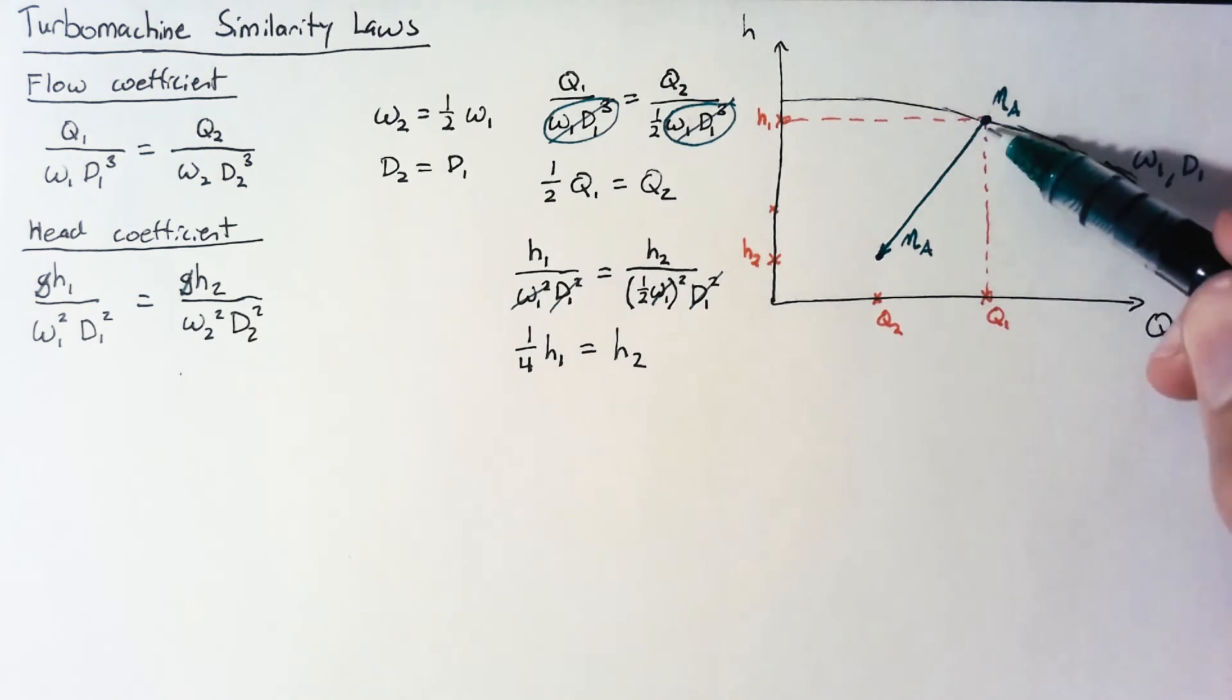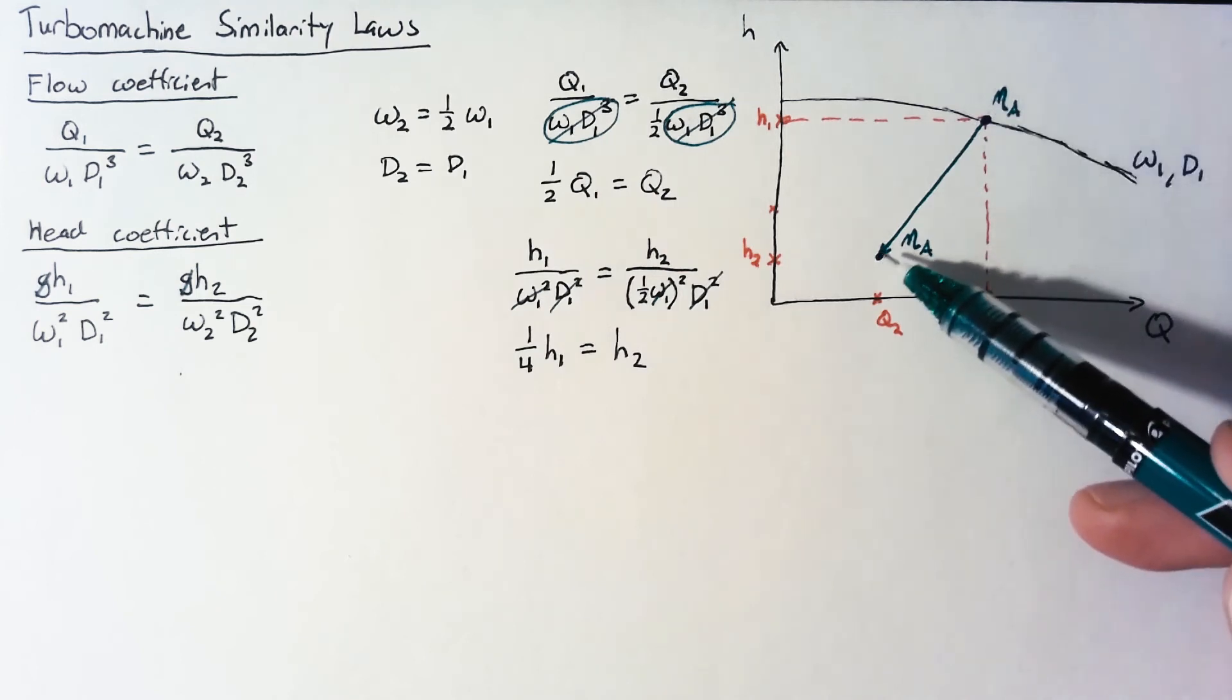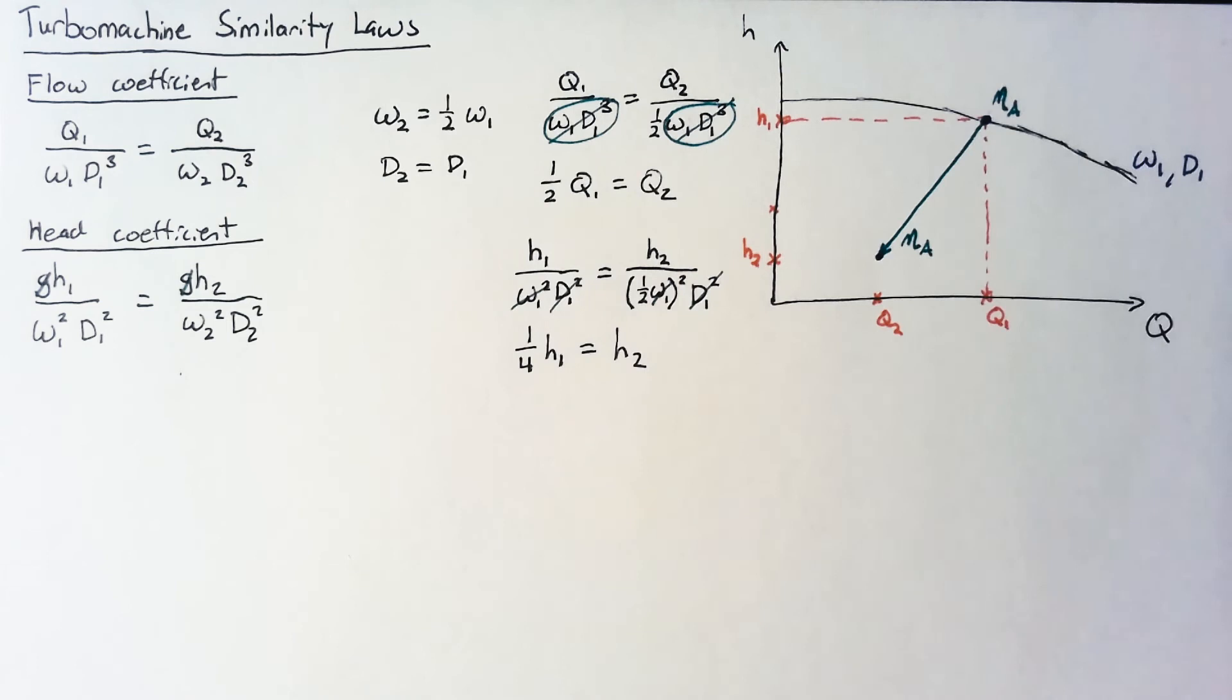For instance if this happened to be our best efficiency point for our original pump, then moving down this point here is still going to have the best efficiency. It's still going to be the best efficiency point, it's just going to have changed both the head and the flow rate.